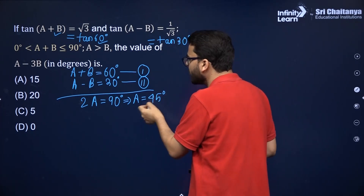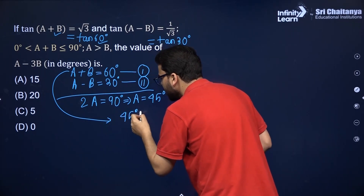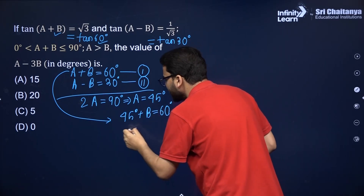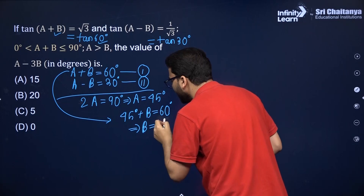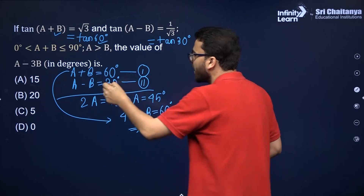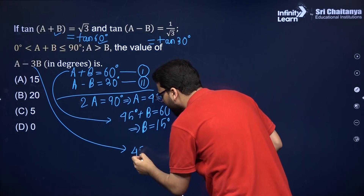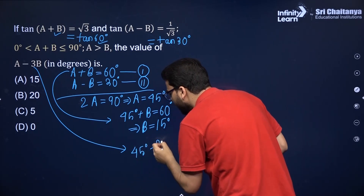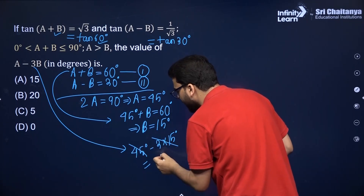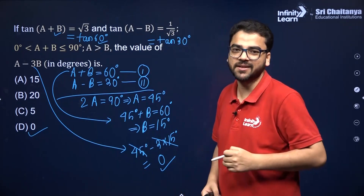So A = 45 degrees. Substituting into the first equation: 45 + B = 60, so B = 15 degrees. Now A - 3B = 45 - 3×15 = 45 - 45 = 0. So the answer is 0 degrees.